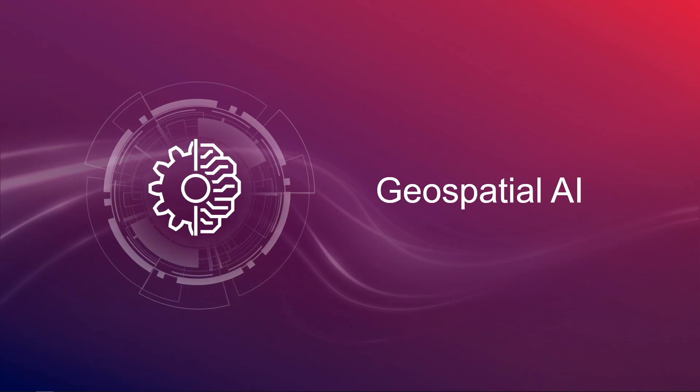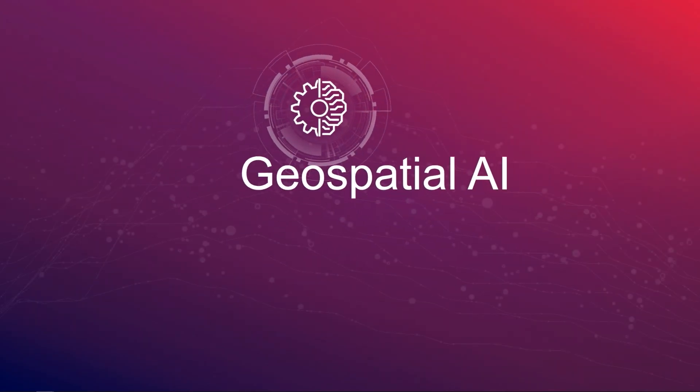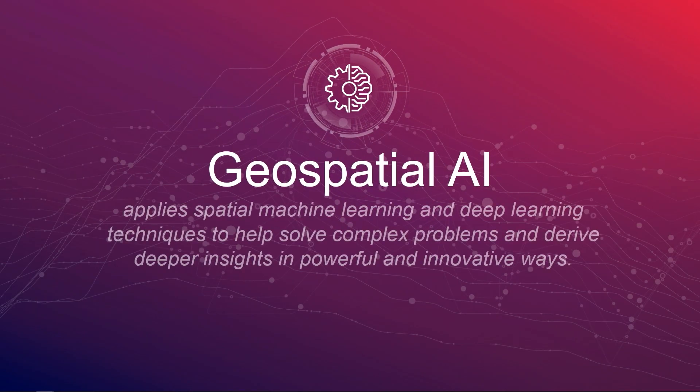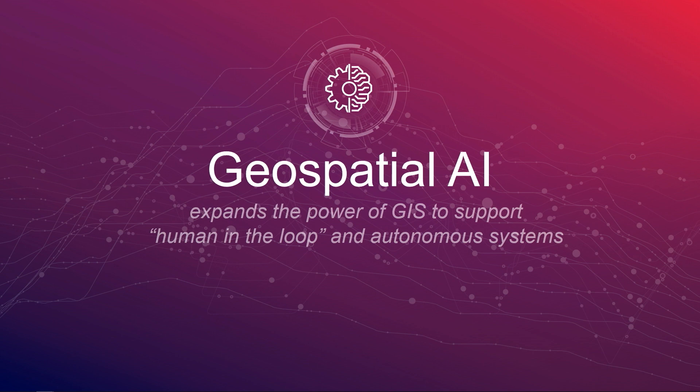Let's take a look at geospatial AI, our recent advancements and what it can do for you. Geospatial AI applies spatial machine learning and deep learning techniques to help solve complex problems and derive deeper insights in very powerful and innovative ways. We are expanding the power of GIS itself to support two kinds of systems in assisting humans — human in the loop, where the expertise of humans comes in along with augmentation from AI — and building fully autonomous systems.